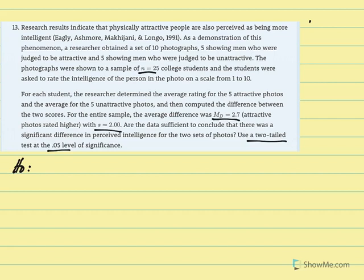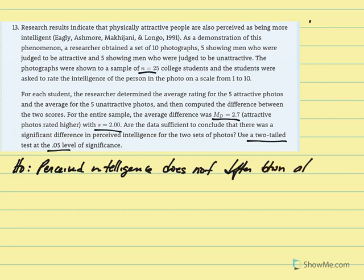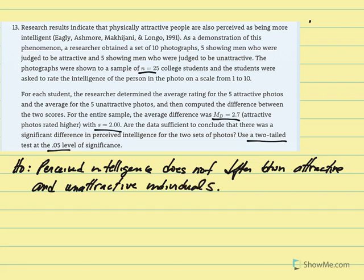So, the null always says that there's no difference. So, we would say that perceived intelligence does not differ between attractive and unattractive individuals. And the notation would be that the mu difference is equal to zero. There's no difference between the two groups.